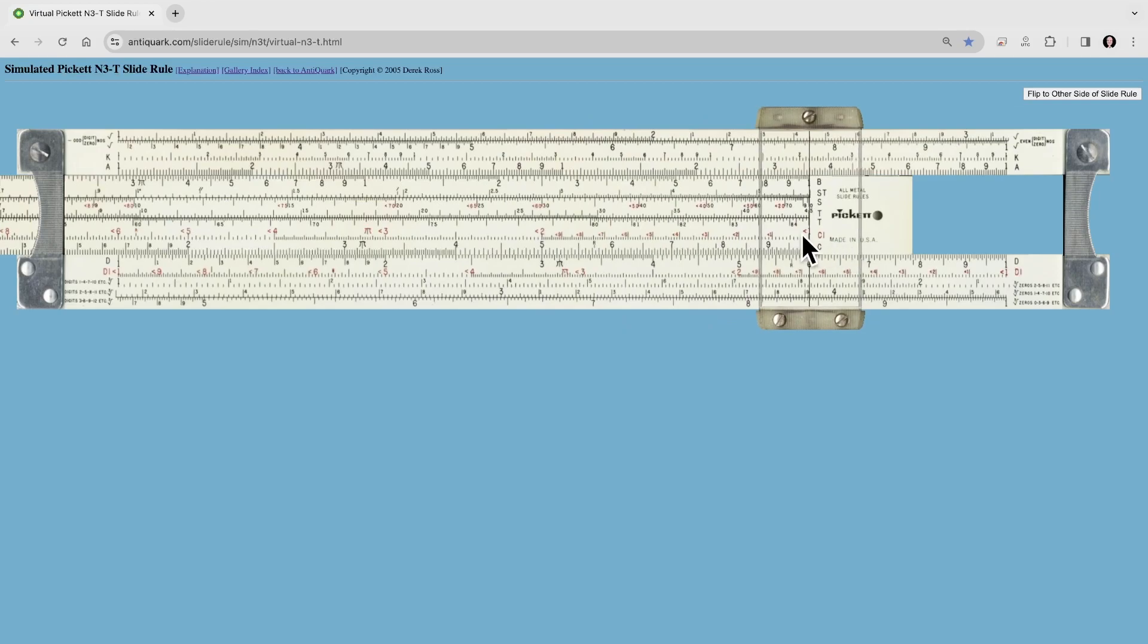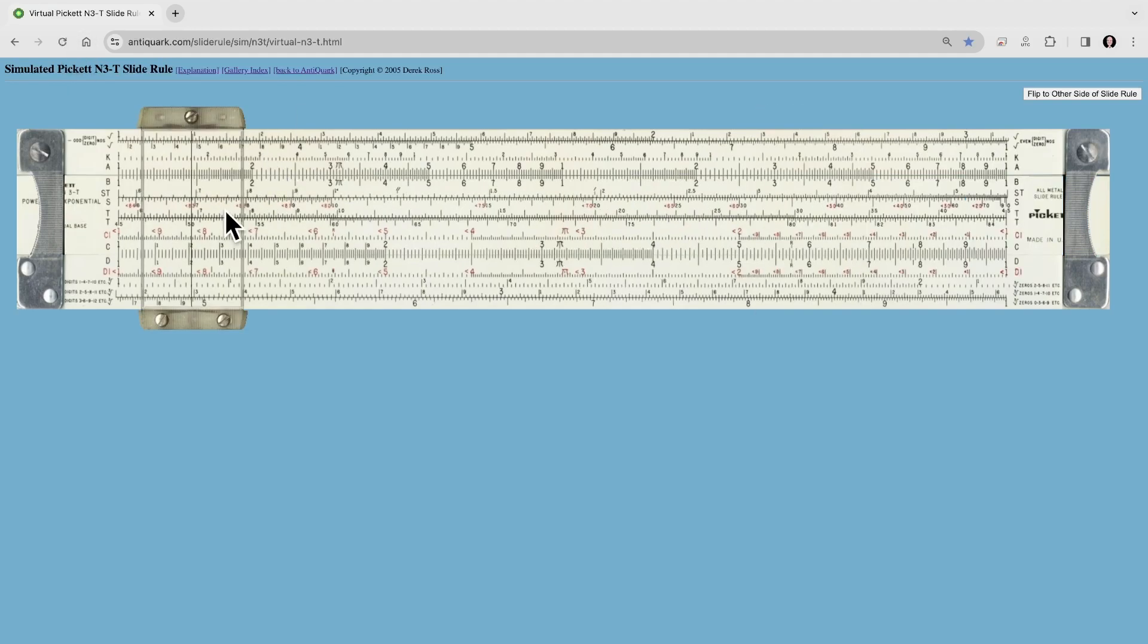Now we can take that 0.6, so let's normalize the slide rule again, come out here to 0.6, and then read straight up to this S scale and see what we get.